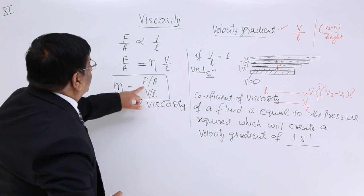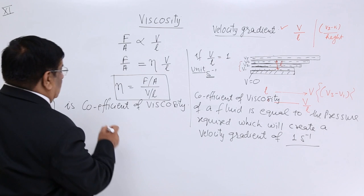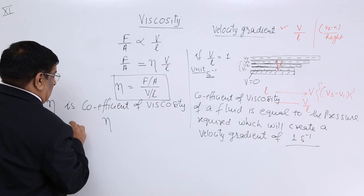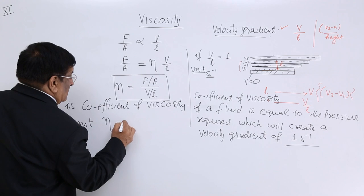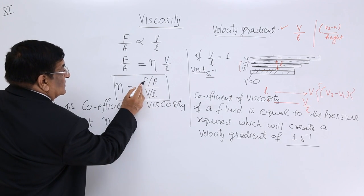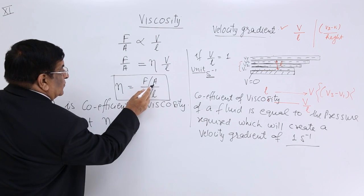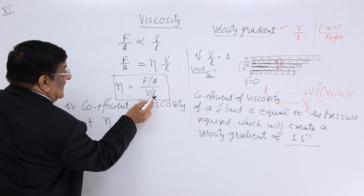This is per second. This is Newton per meter square. So coefficient of viscosity unit, this is Newton per meter square per, this is per second.